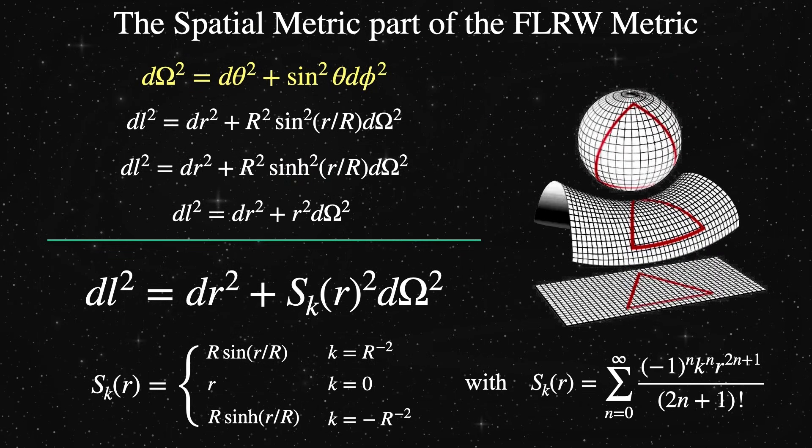Last time we looked at the spatial metric for an isotropic homogeneous space with constant and uniform curvature. We ended on these particular coordinates, called hyperspherical coordinates, because they're what Ryden uses in her textbook.